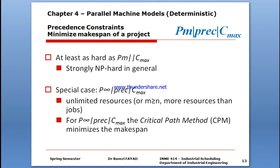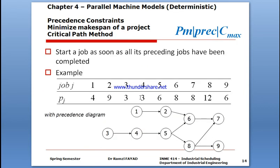In this video we're going to show how to minimize the makespan of a project. If you have several machines with precedence constraints and parallel machines, make sure there is a flow. Makespan is the time when the last job would finish. The job scheduling could be a flexible flow shop with more than one machine at every stage. We'll use the critical path method to minimize the makespan.